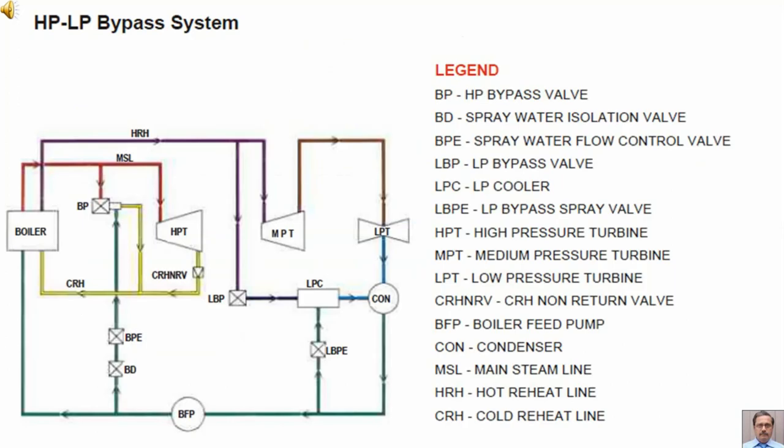In this slide we are showing a schematic of HP LP bypass system. In this schematic diagram we can see the boiler, the high pressure turbine, medium pressure turbine, low pressure turbine, condenser, then HP bypass system and LP bypass system. The boiler feed pump is also shown here.